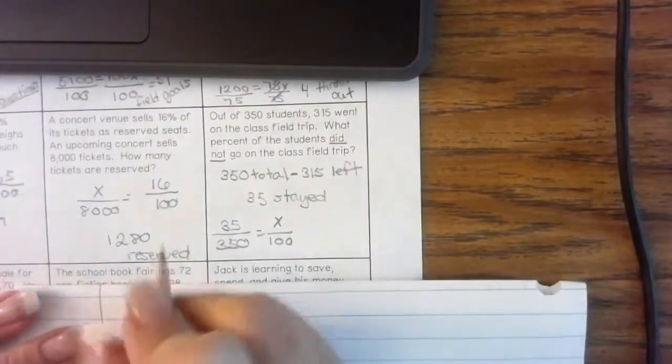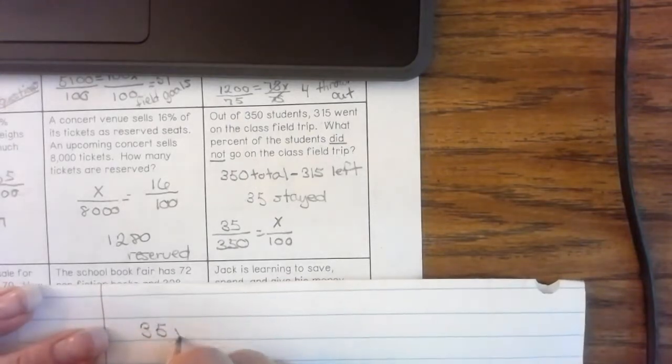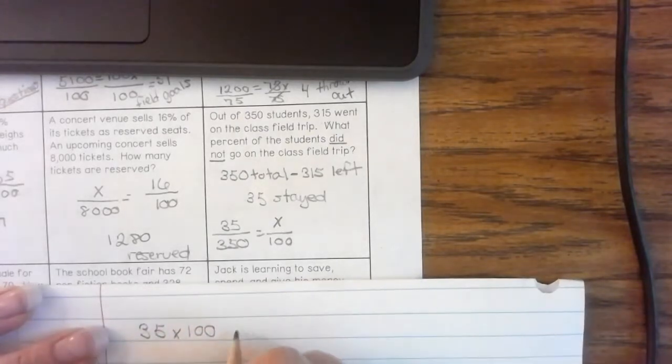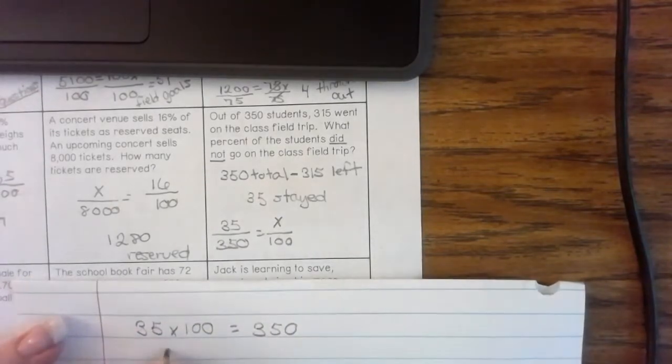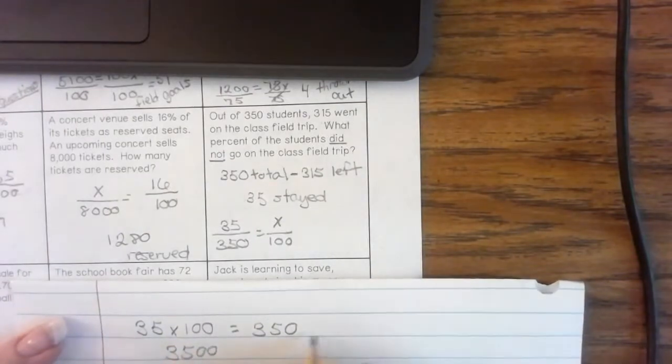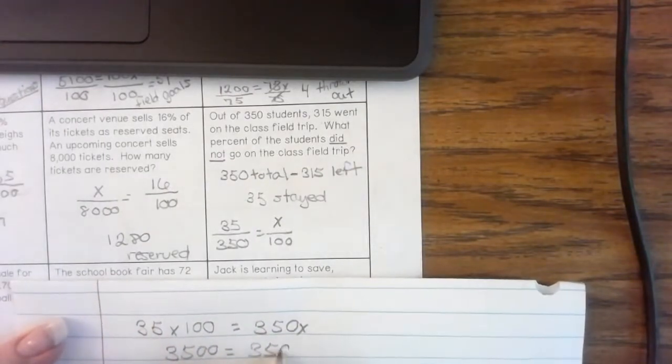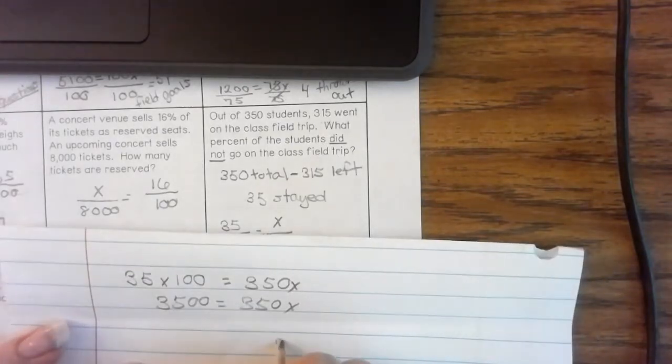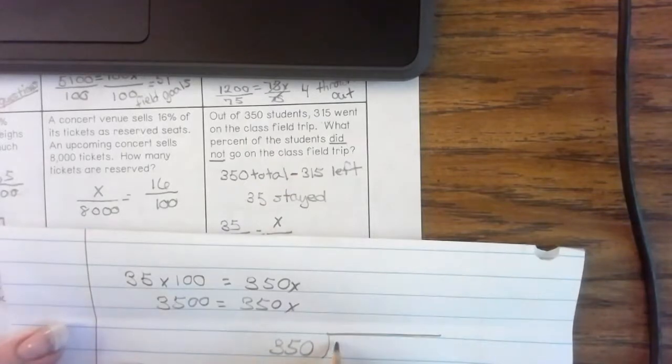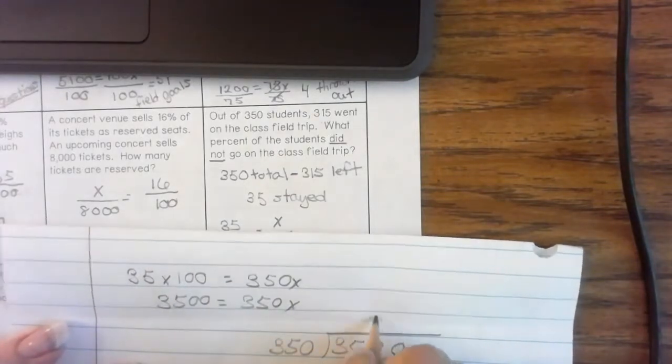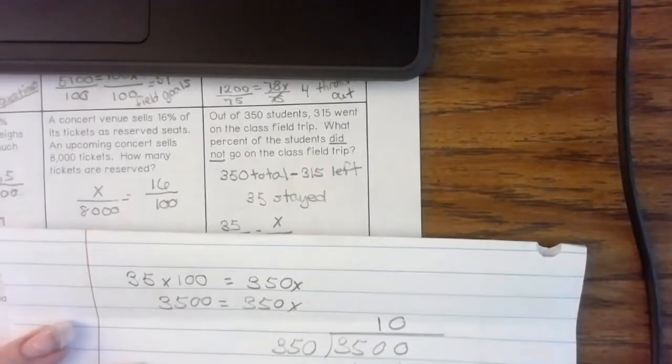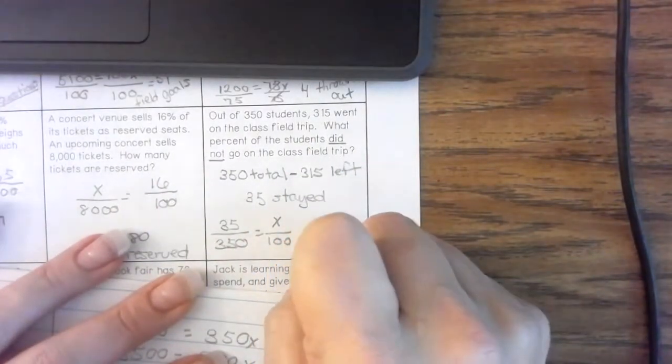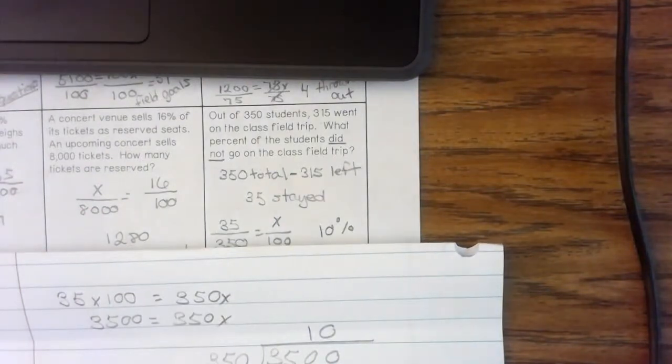So, I'm going to do 35 times 100 equals 350. 35 times 100, guys, is 3,500 equals 350X. So, that'll go one time. That'll go zero times. And we are done. It is 10% stayed behind. 10% stayed behind.